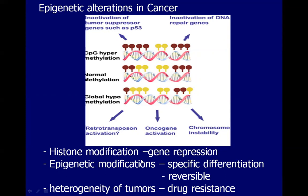Epigenetic modifications can generate tumor differentiation with production of a gene expression profile for a particular cell type. The modifiers involved are enzymes — that is why the process is reversible — such as methylases and histone acetylases, and these are now targets for tumor therapy. However, tumors also have heterogeneity, and one example is drug resistance, meaning not all tumors can respond to therapy targeting epigenetic modifications.